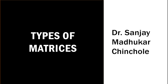Namaste friends. In the last lecture on types of matrices, we learned about row matrix, column matrix, rectangular matrix, square matrix, and the diagonal elements in square matrices. In this lecture on types of matrices, we are going to learn diagonal matrix, scalar matrix, identity matrix, and triangular matrices.